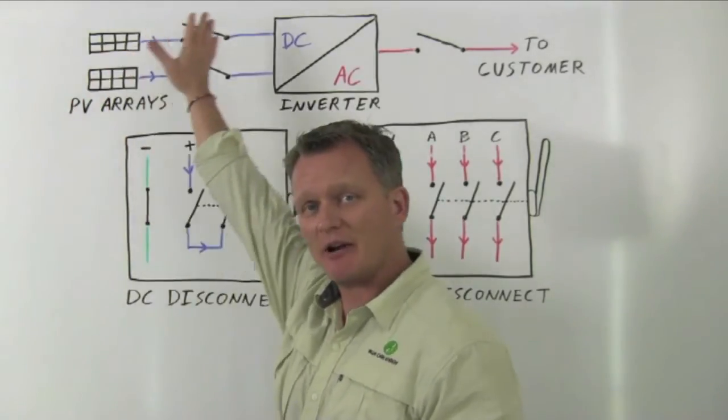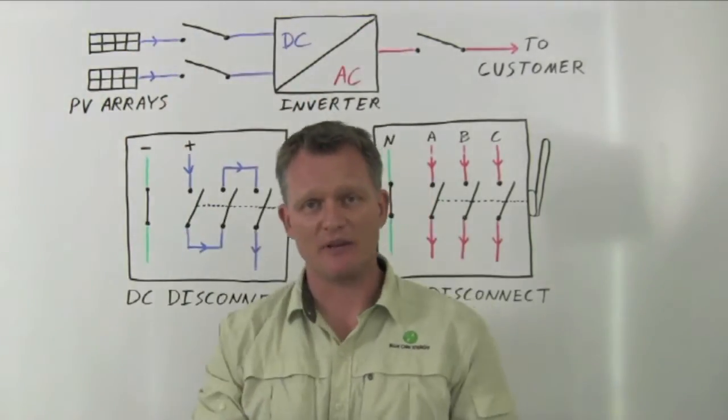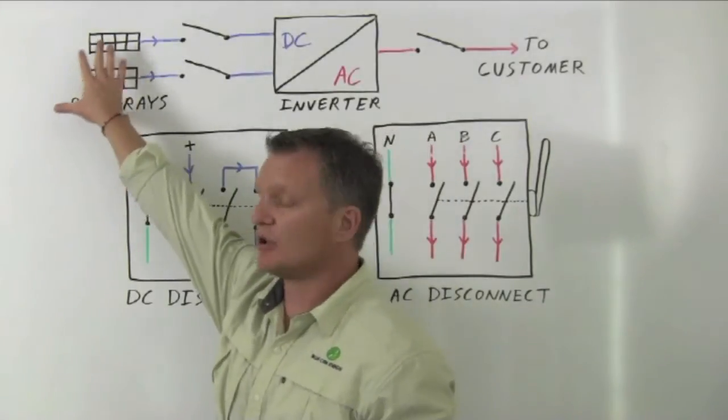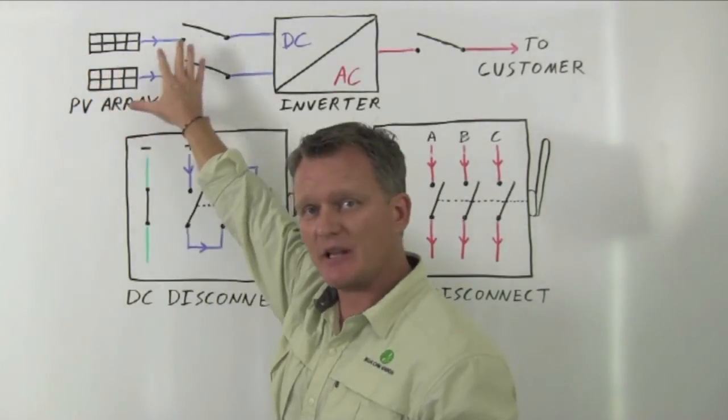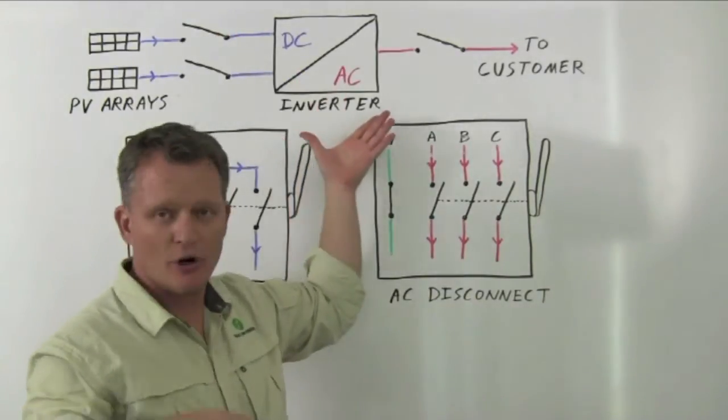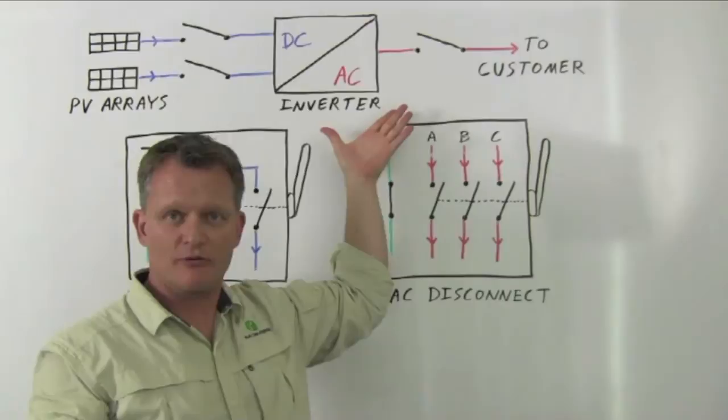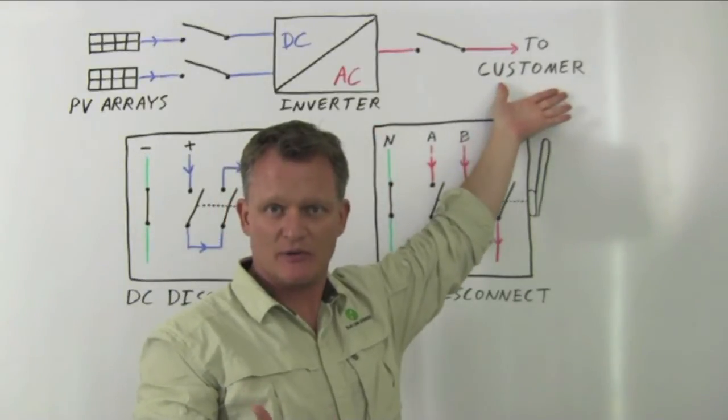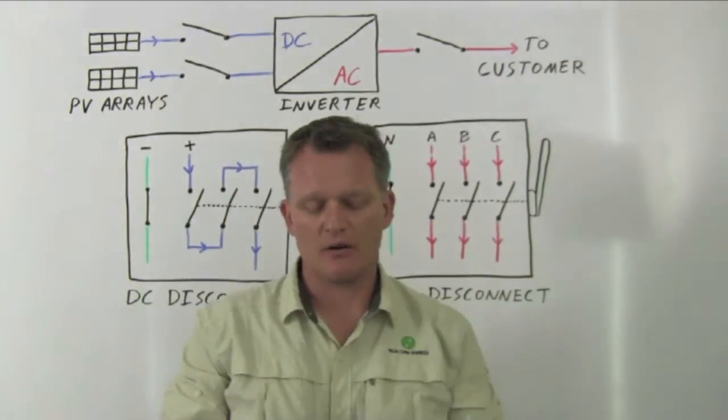Up here on the board we have a simplified diagram of a solar PV system. We have solar arrays producing electricity in direct current form. We use an inverter to convert that to alternating current form, which ultimately the customer needs over here on the other side.